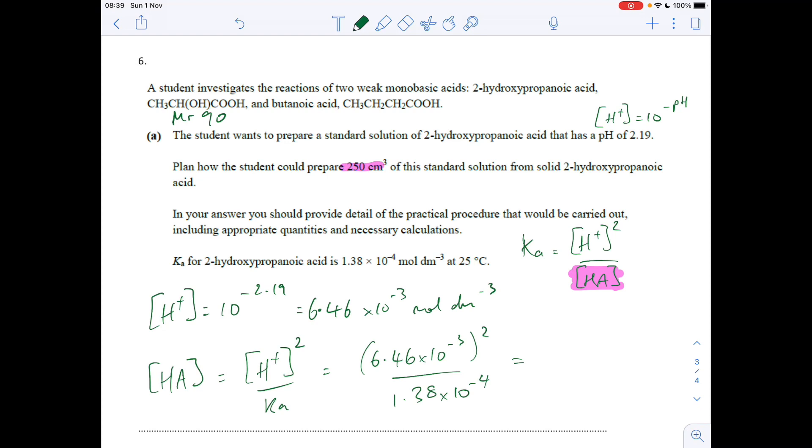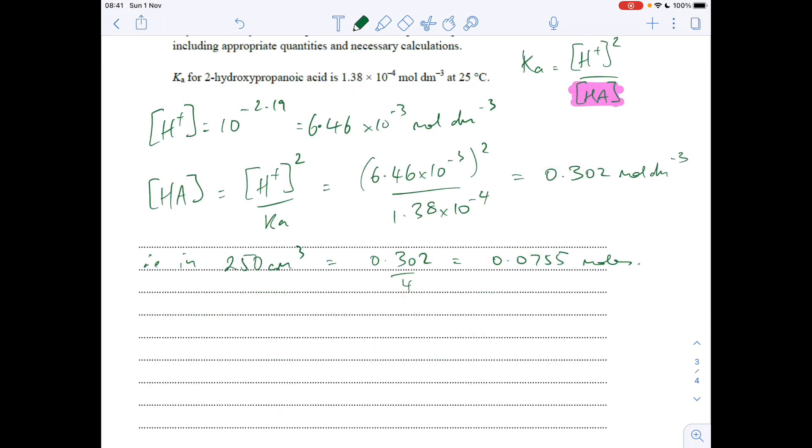I've fed the numbers in and that means that this has to have a concentration of 0.302 moles per decimeter cubed. So in the 250 cm³ we're going to need a quarter of that, so that's 0.0755 moles.